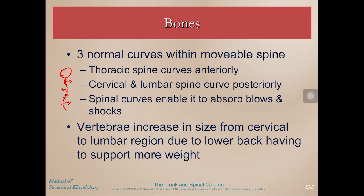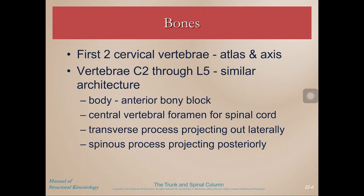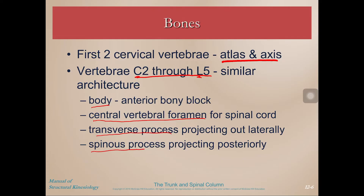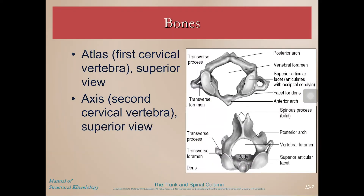The first two cervical vertebrae are called the atlas and the axis and are different in shape from the rest. From C2 through L5, the vertebrae are named using the first letter of the region — C for cervical, L for lumbar — and then the number according to its position from superior to inferior. All vertebrae are comprised of a body on the anterior aspect, the central vertebral foramen where the spinal cord runs on the posterior aspect, transverse processes on either side, and a spinous process which you can easily palpate, especially at C7.